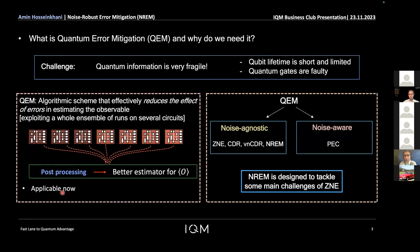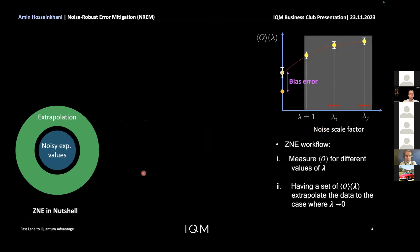For quantum error mitigation, one can put all different techniques into two general categories. There is noise-aware quantum error mitigation, which requires detailed knowledge about the hardware noise. The other category is noise agnostic, where a user does not need to know anything about the noise. The technique I'm presenting today — NREM — belongs to the noise-agnostic category. It was initially designed to tackle some main challenges of another technique called zero noise extrapolation. In zero noise extrapolation, we measure the observable of interest at various noise scales, fit them to a specific function, and extrapolate to find an estimation of the noiseless value.